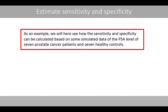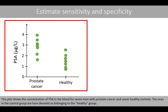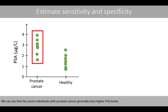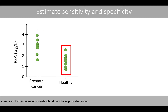As an example, we will see how the sensitivity and specificity can be calculated based on some simulated data of the PSA level of seven prostate cancer patients and seven healthy controls. The ones in the control group are denoted as belonging to the healthy group. For example, one person has prostate cancer and a PSA level of about 4 micrograms per liter, whereas a healthy individual has a PSA level of about 2.5. The seven individuals with prostate cancer generally have higher PSA levels compared to the seven individuals who do not have prostate cancer.